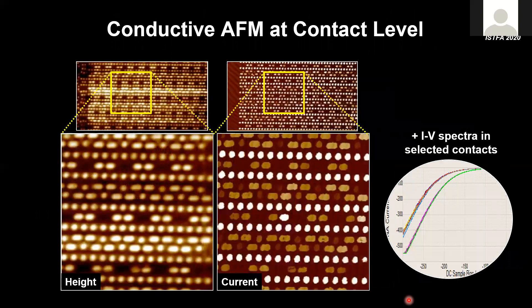A second commonly used mode for electrical characterization is to measure conductivity. To measure conductivity, we apply a voltage to the back side of the sample and measure the current flowing through the tip. A typical application is at the contact level where we have, for example, a deep process device where tungsten plugs are exposed. In a large area view you can see all the bumps corresponding to the tungsten plugs. We can simultaneously measure conductivity, and we see different plugs show up with different conductivity — it's actually the device connected to the tungsten that causes these differences.